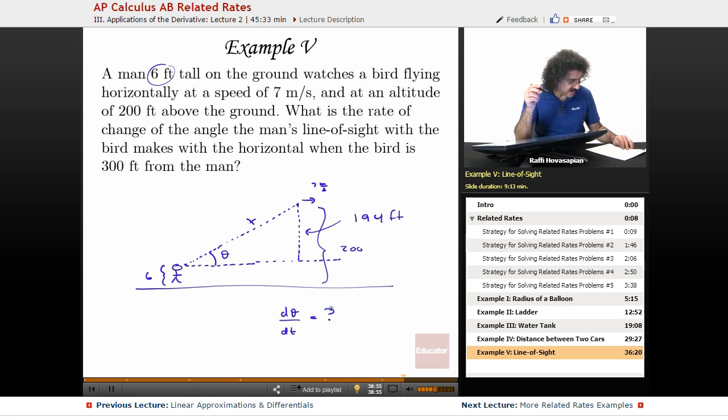What rate do they actually give us? The rate that they give us is horizontally at a speed of seven meters per second. This distance right here, we'll call that x because the bird is flying horizontally. That means this distance between the man and directly below the bird changes at seven meters per second. So that's going to be dx dt, seven meters per second. So this is the rate that they give us. This is the rate that they want.